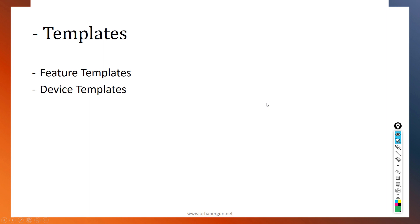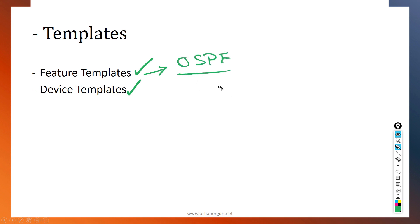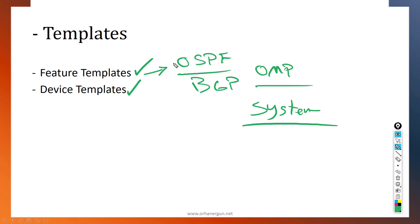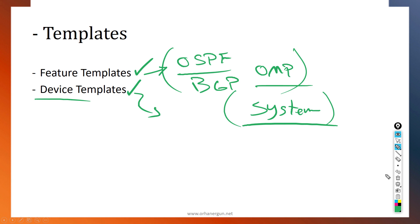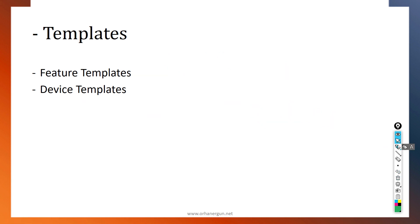Then we will talk about templates. We have two kinds: feature templates and device templates. Feature templates cover things like OSPF configuration, BGP configuration, OMP, system configuration, and so on. Based on those feature templates, we can create device templates and attach them to devices — both controllers and WAN edge devices.